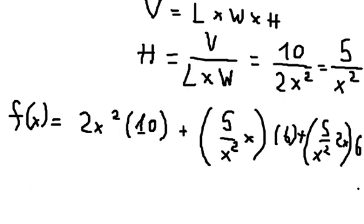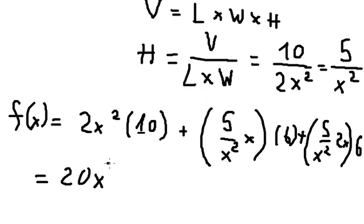And now we need to simplify everything. This one we have 20x squared. This one if we simplify we have 90 over x.